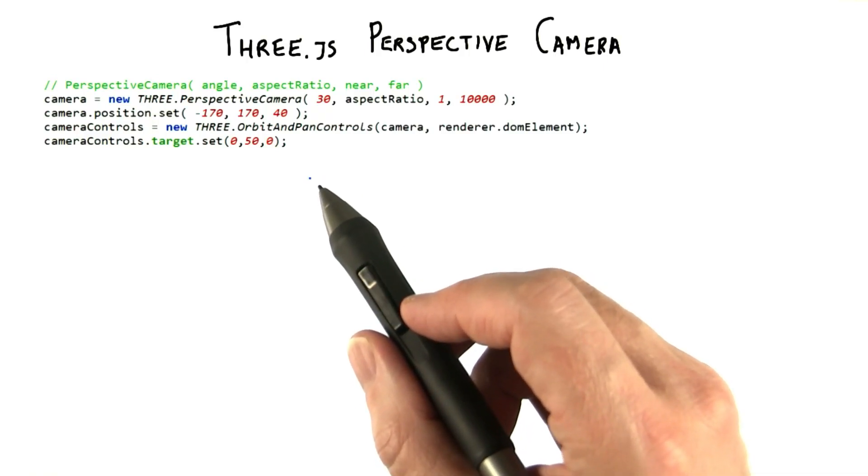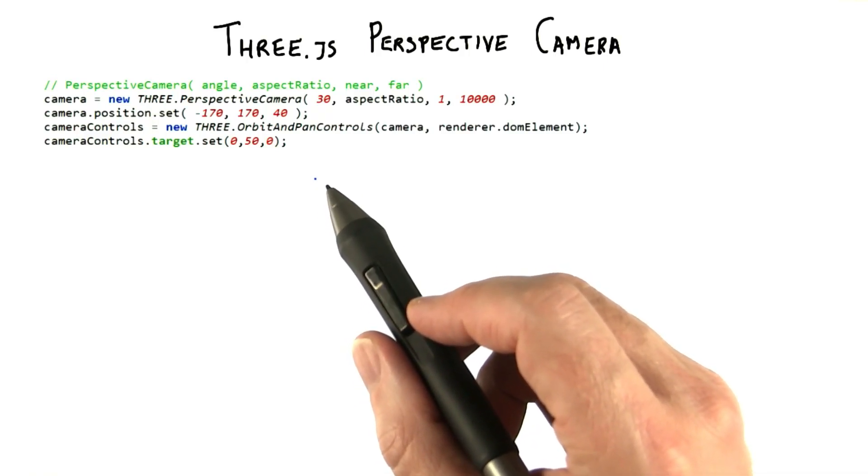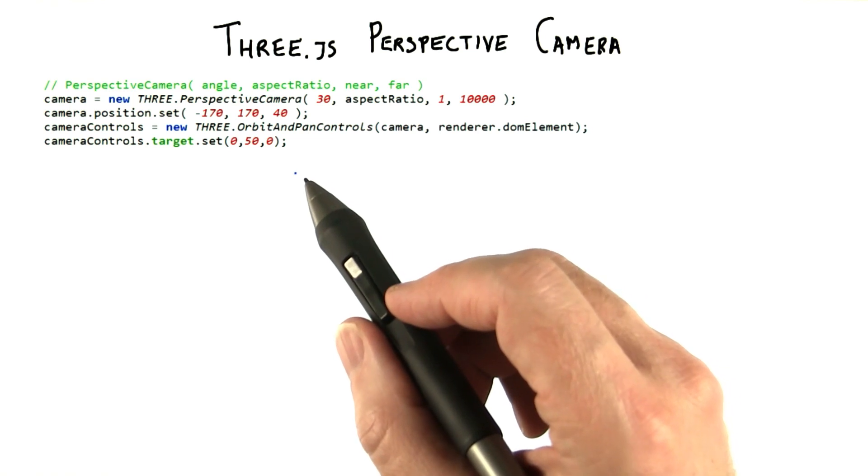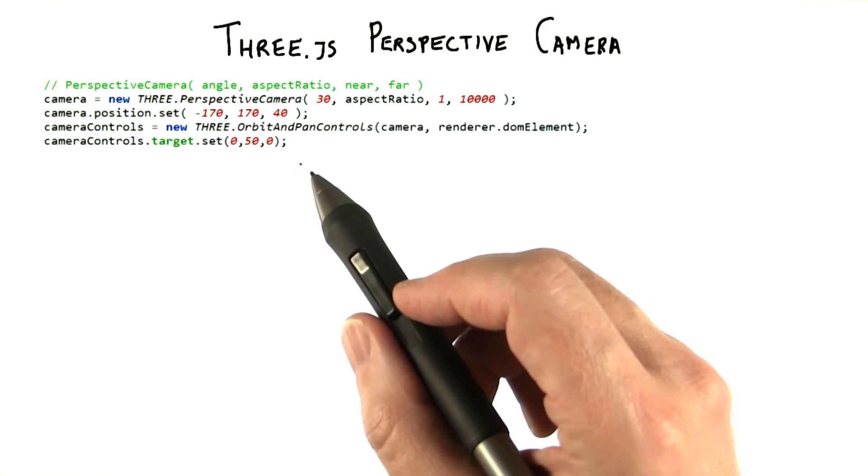Before explaining how projection works, let's talk about how the perspective camera is set in Three.js. It's similar to the orthographic camera. In fact, the creation call has fewer parameters.